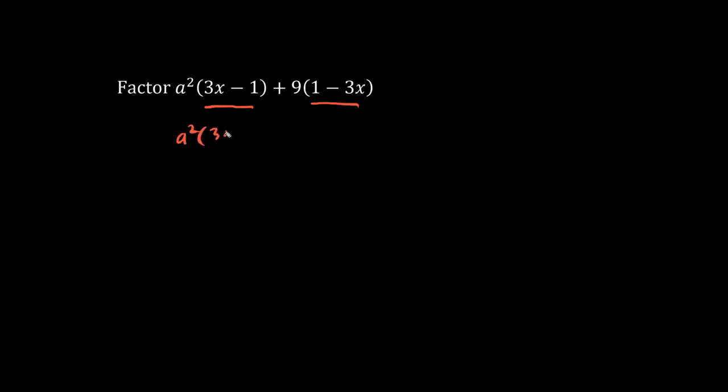So we have a squared, 3x minus 1, minus 9, and we switch the signs. Negative 3x becomes positive 3x, and positive 1 becomes minus 1.